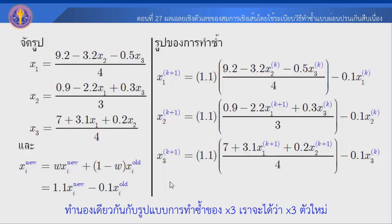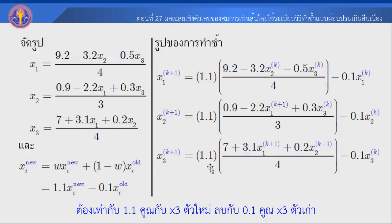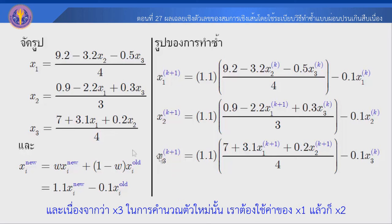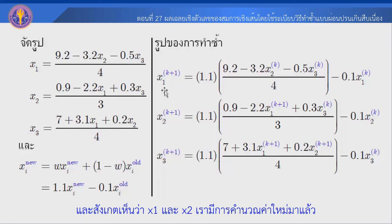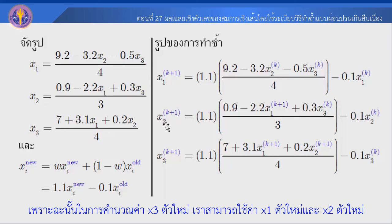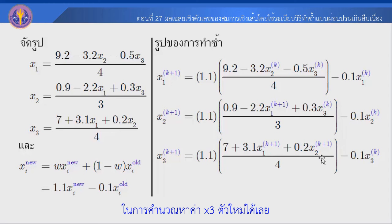Now we compute x3_new. x3 is equal to 1.1 times the Gauss-Seidel x3 minus 0.1 times x3_old. With x3 values: 9 and 2. We then use the updated x1_new and x2_new to compute x3_new. So x1 and x2 are now used, and we can find the new value of x3.